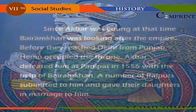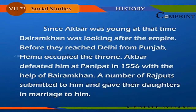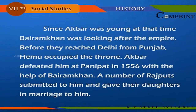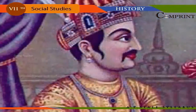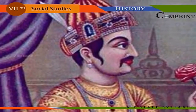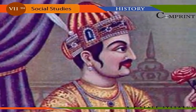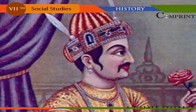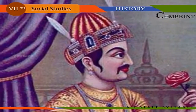Akbar. Since Akbar was very young at the time, Bairam Khan was looking after the empire. Before they reached Delhi from Punjab, Hemu occupied the throne. Akbar defeated him at Panipat in 1556 with the help of Bairam Khan. A number of Rajputs submitted to him and gave their daughters in marriage to him. Akbar could conquer Khandesh, Asirgarh, and a few fortresses in Ahmadnagar. Since his son Jahangir revolted against him, he had to go back to Agra. Akbar died in 1605.